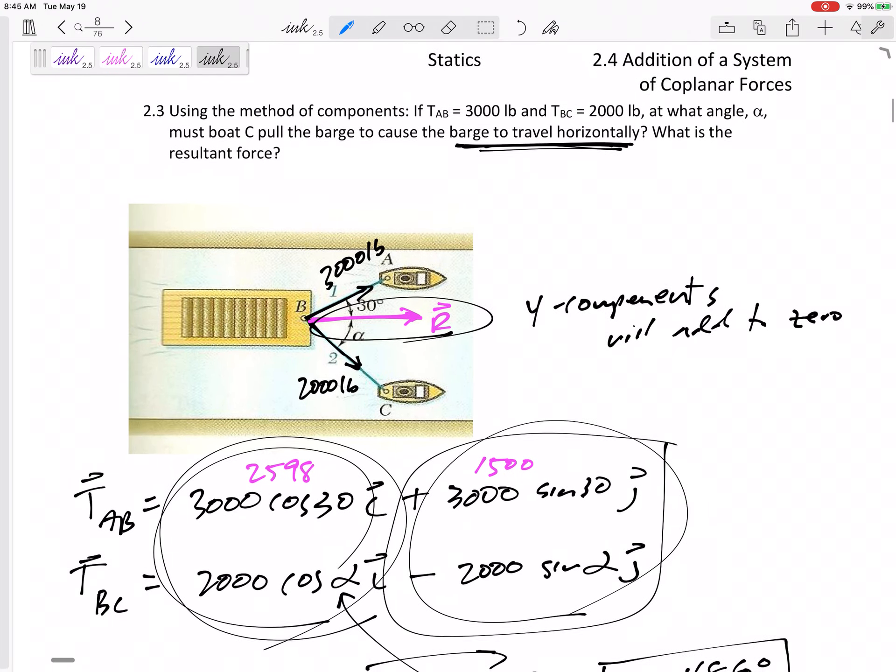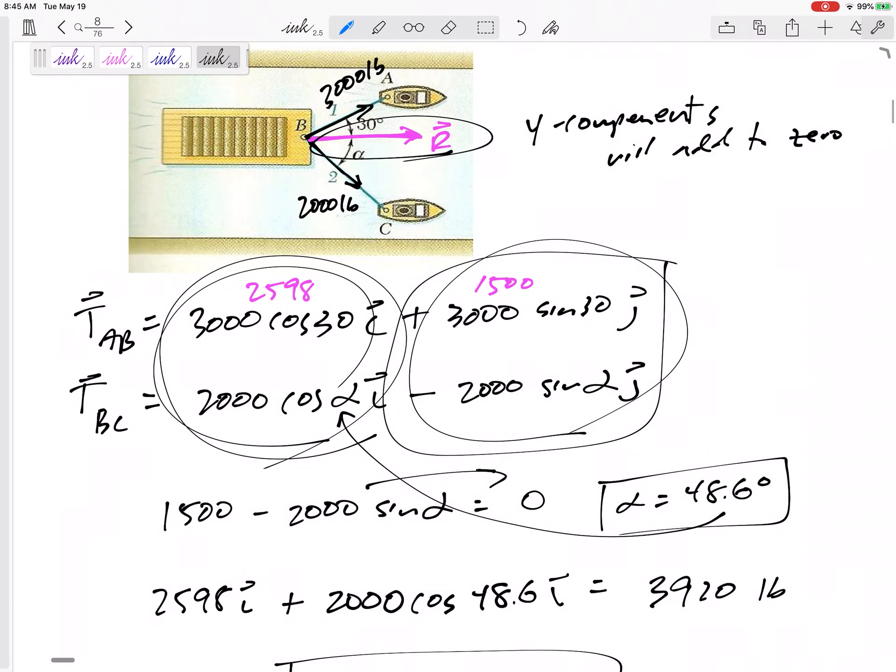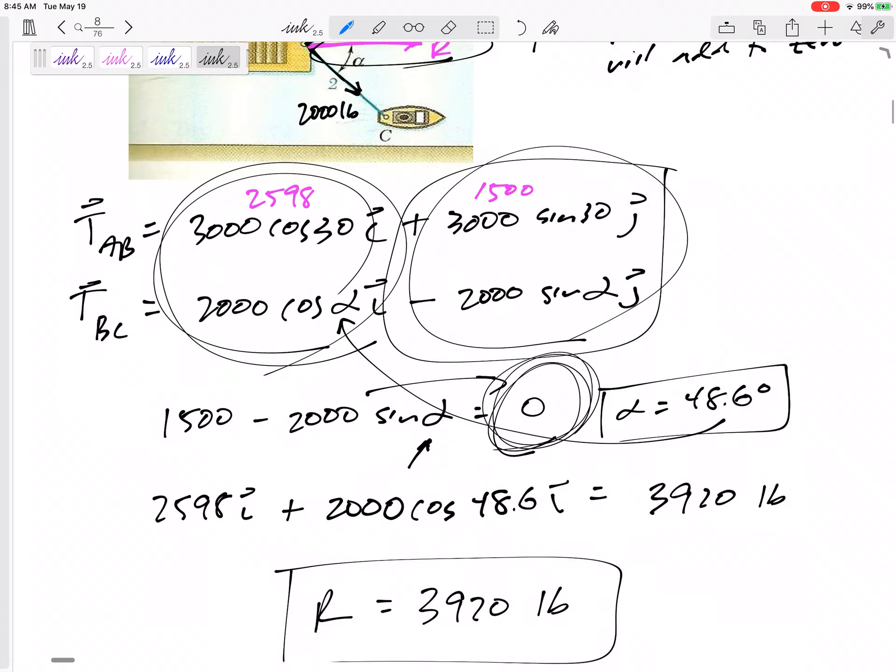So sometimes, they tell us the resultant is zero. And our unknown is on the left-hand side of our equation when we're adding our components together. But remember, just add the components together. Break them into their components and add them together.